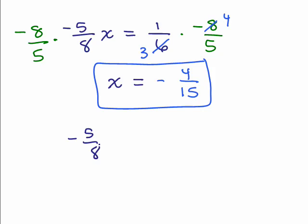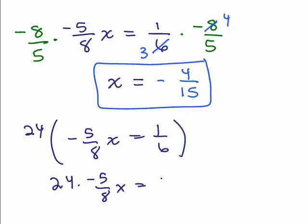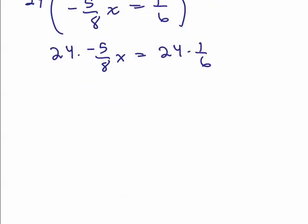Negative 5 eighths x equals 1 sixth, you multiply by the least common denominator, which is 24, 8 and 6, 24 go into both, those both go into 24. So, I have 24 times negative 5 eighths x equals 24 times 1 sixth, and now what you need to do is cancel, and you get a problem without any fractions.